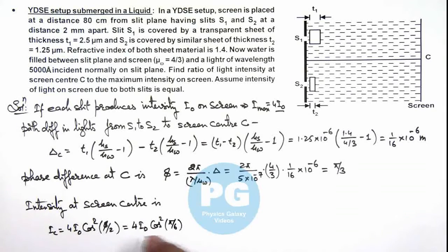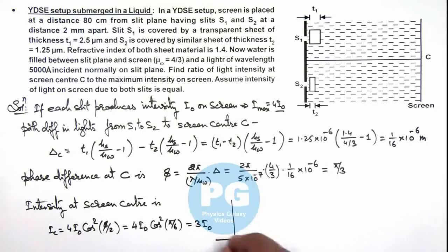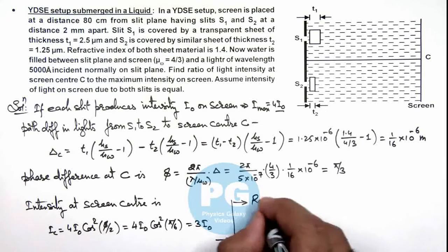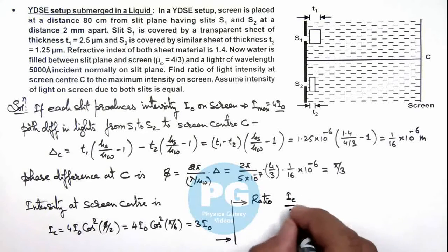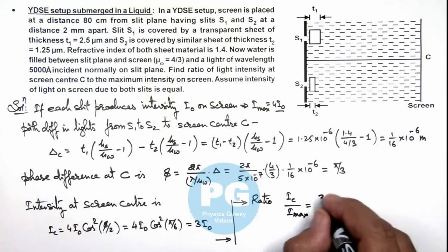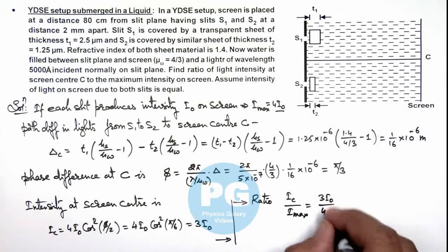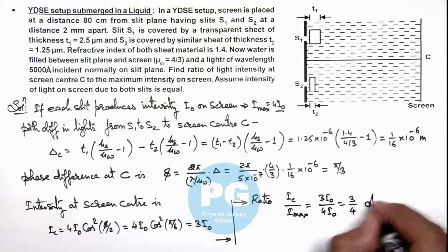So on substituting the value of cos(π/6) and square it is 3/4, so the value we are getting is 3I₀. So here we can analyze the ratio of intensity at screen center to maximum intensity will be given as this 3I₀ divided by 4I₀, which is equal to 3/4. That is the result of this problem.